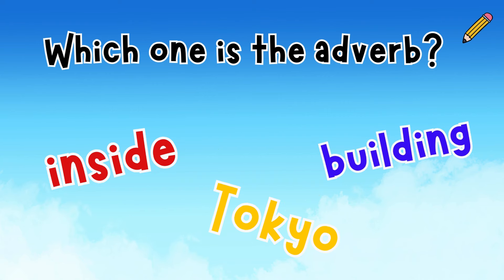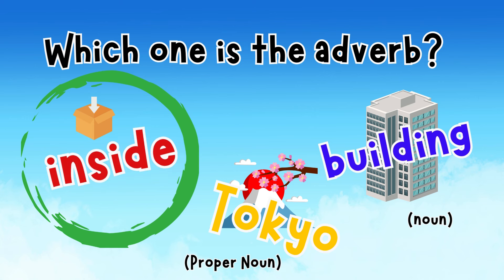Let's play again. Which one is the adverb? Is it inside, Tokyo, or building? Inside. A building is a thing, so it's a noun. Tokyo is a place, so we start it with a capital T and call it a proper noun. That leaves us with the word inside — that's an adverb. Where is the present? Inside the box.